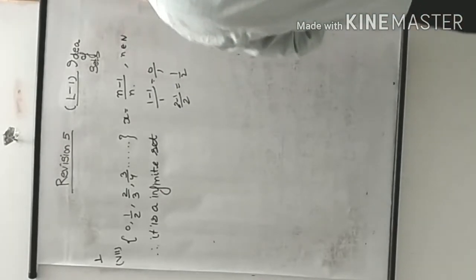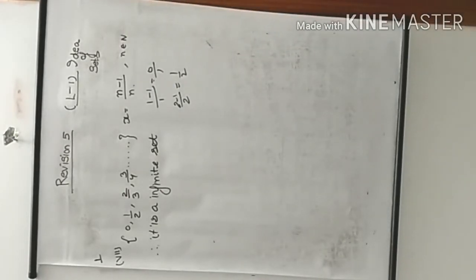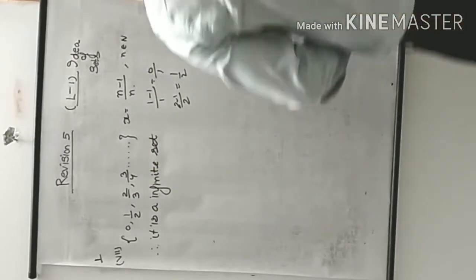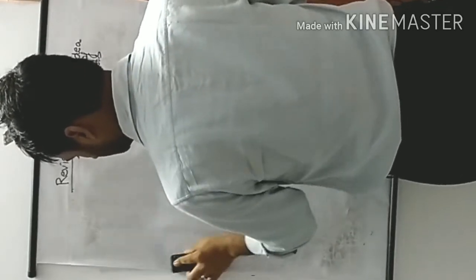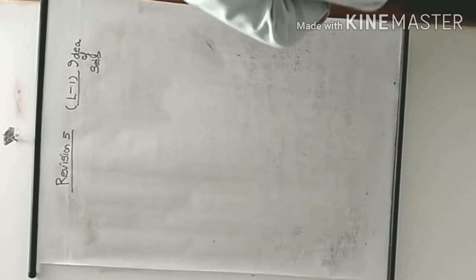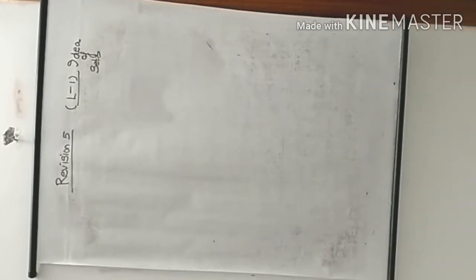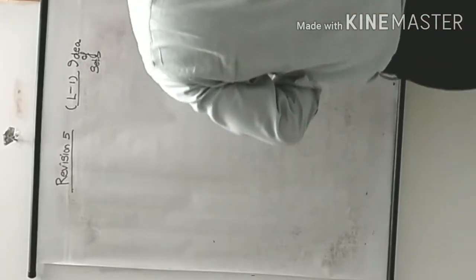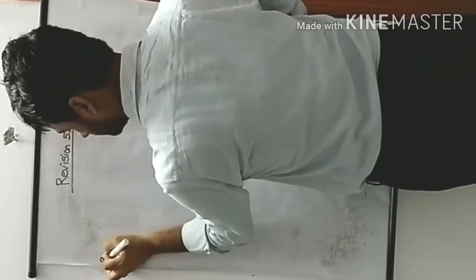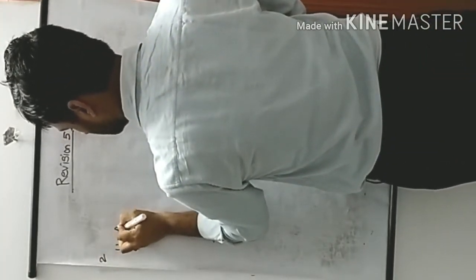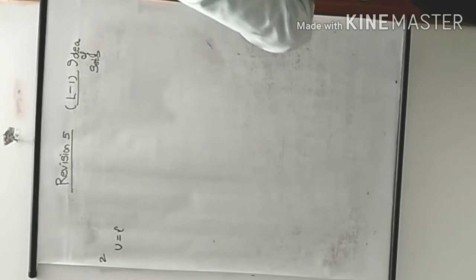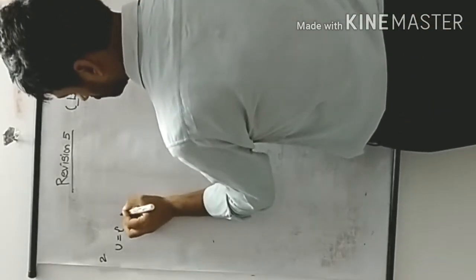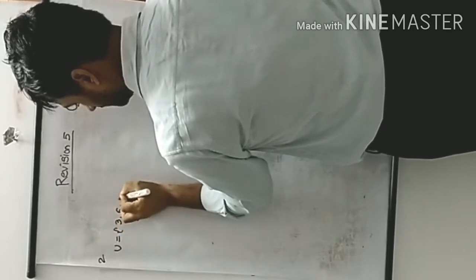Now question 2. U is multiples of 3 between 0 and 37, so U = {3, 6, 9, 12, 15, 18, 21, 24, 27, 30, 33, 36}. This is the universal set. Then A is the set where x is a multiple of 6.